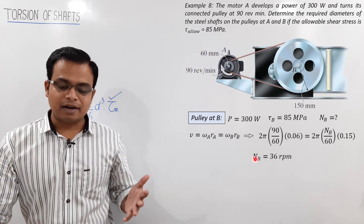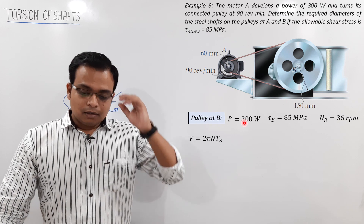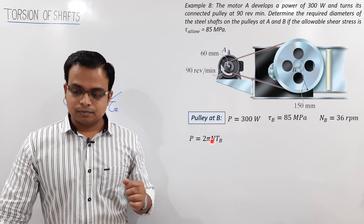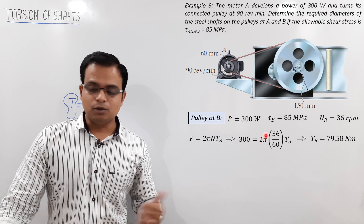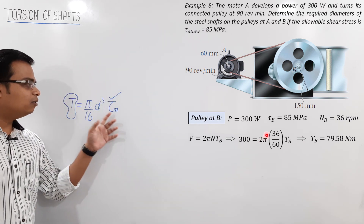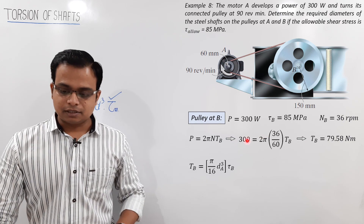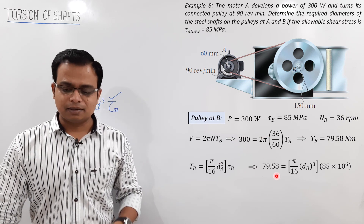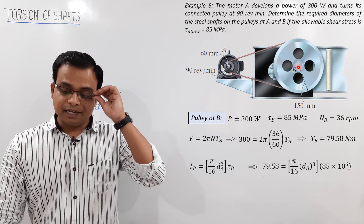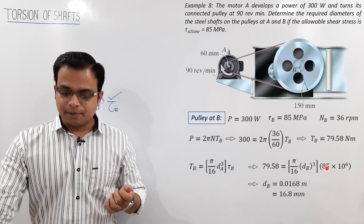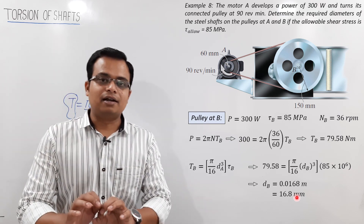With N_B = 36 RPM (36/60 RPS) and P = 300 W, torque T_B = 79.58 N·m. Using T = (π/16)·D³·τ_max with τ_max = 85 MPa, D_B = 0.0168 m = 16.8 mm. That completes the pulley problem.